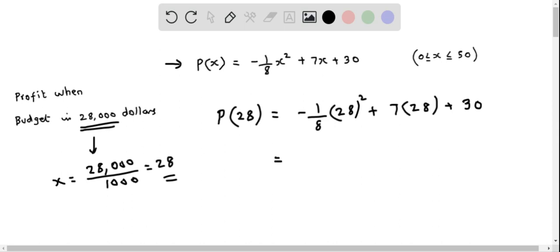We can simplify this. When we plug these values into the calculator, we get 128 dollars. Therefore, the profit is $128 when the budget is $28,000.